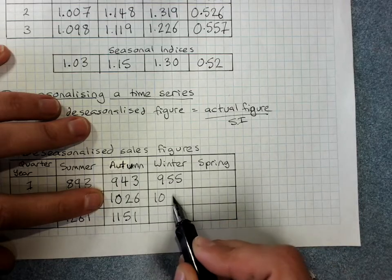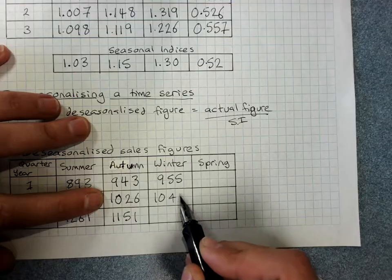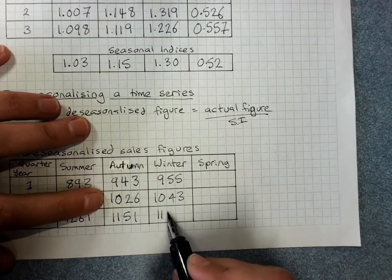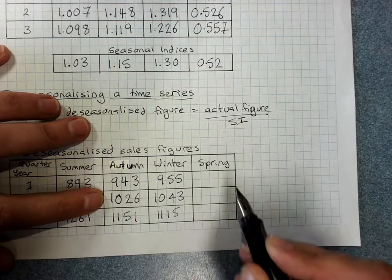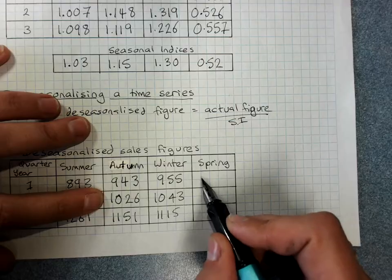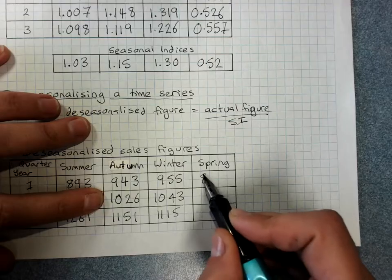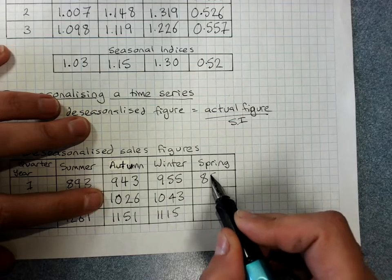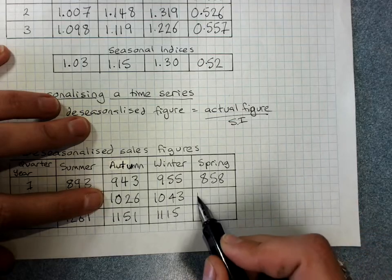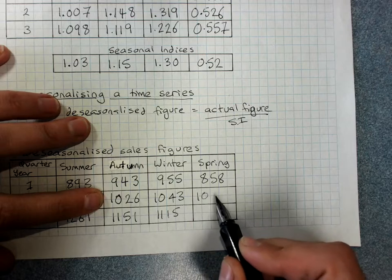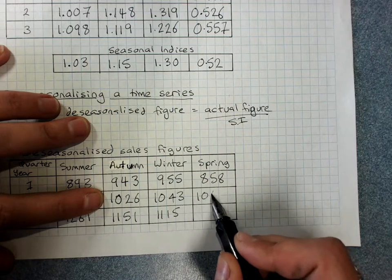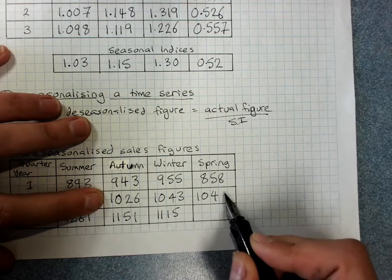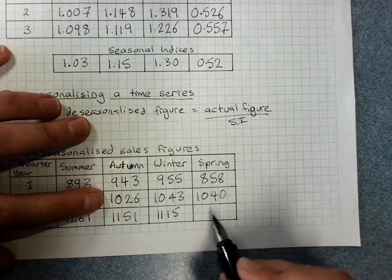There's still variation because other things are happening in the sales data. But to the best of our ability, we've taken out the effect of summer, winter, autumn, and spring being different.